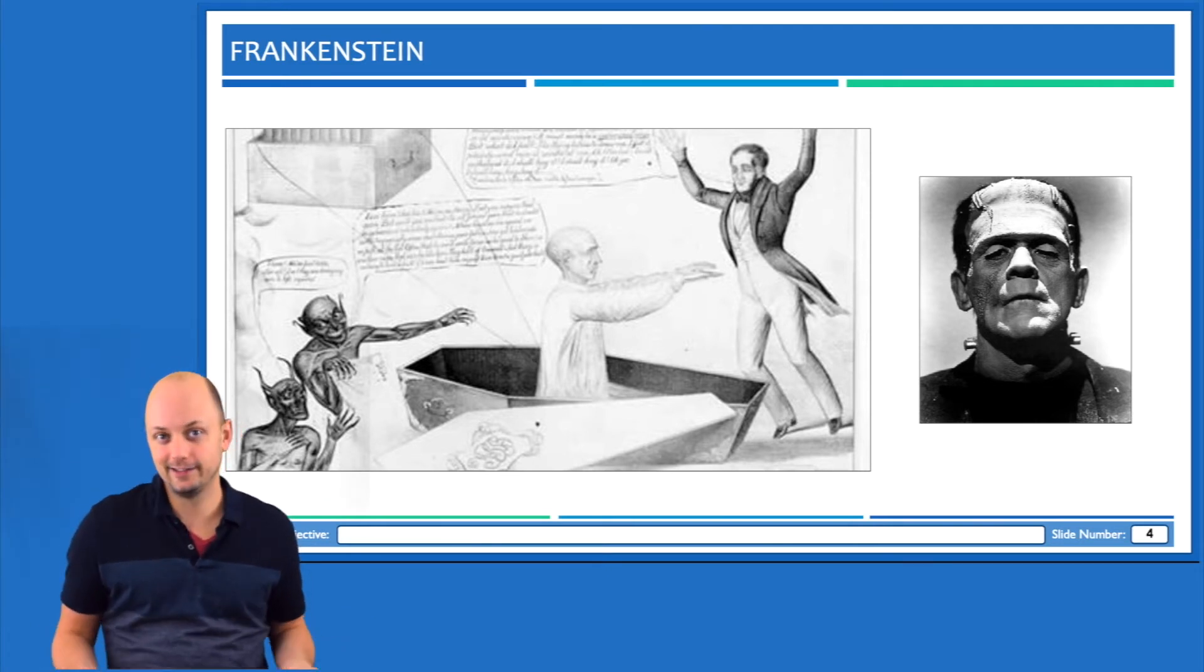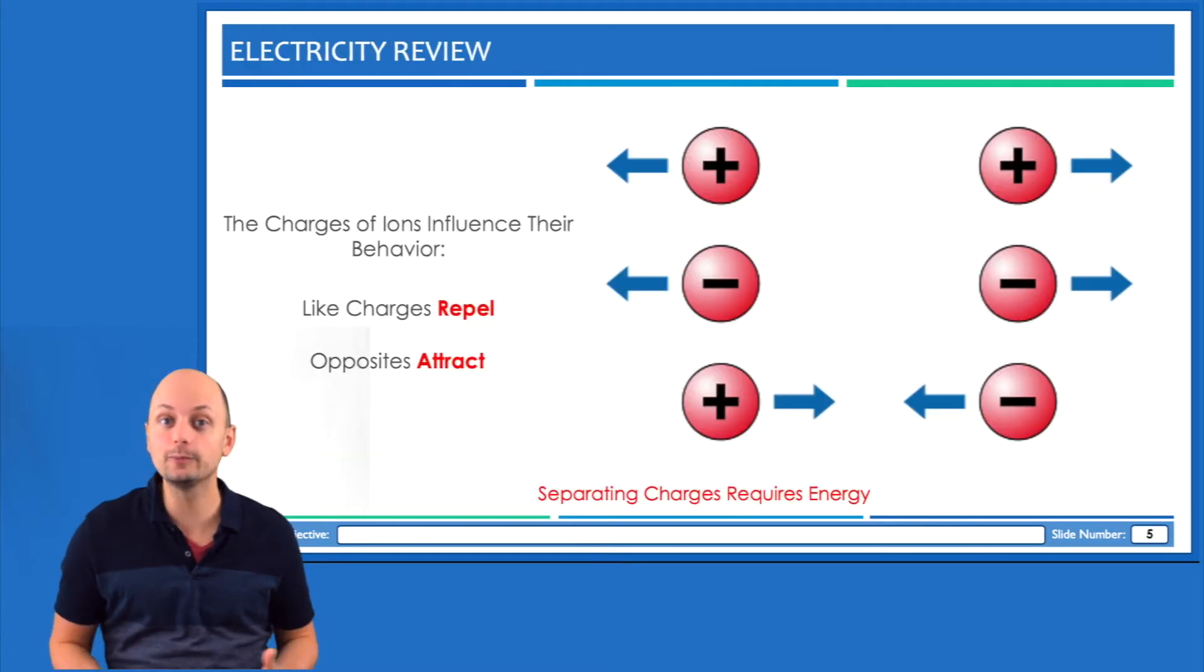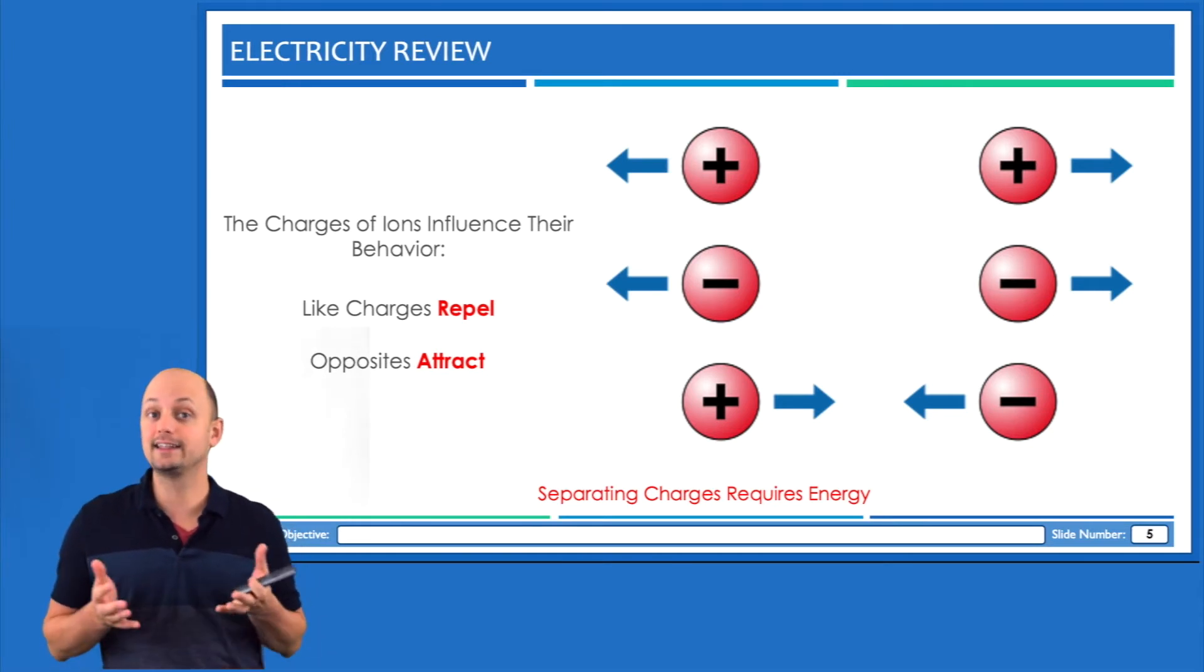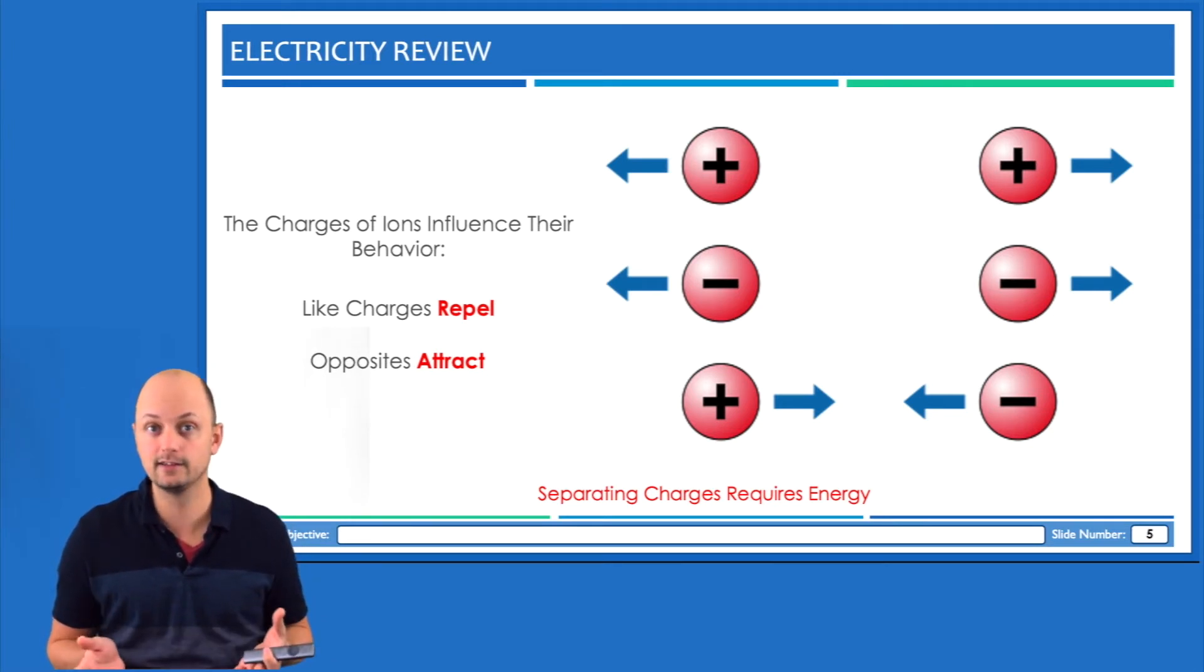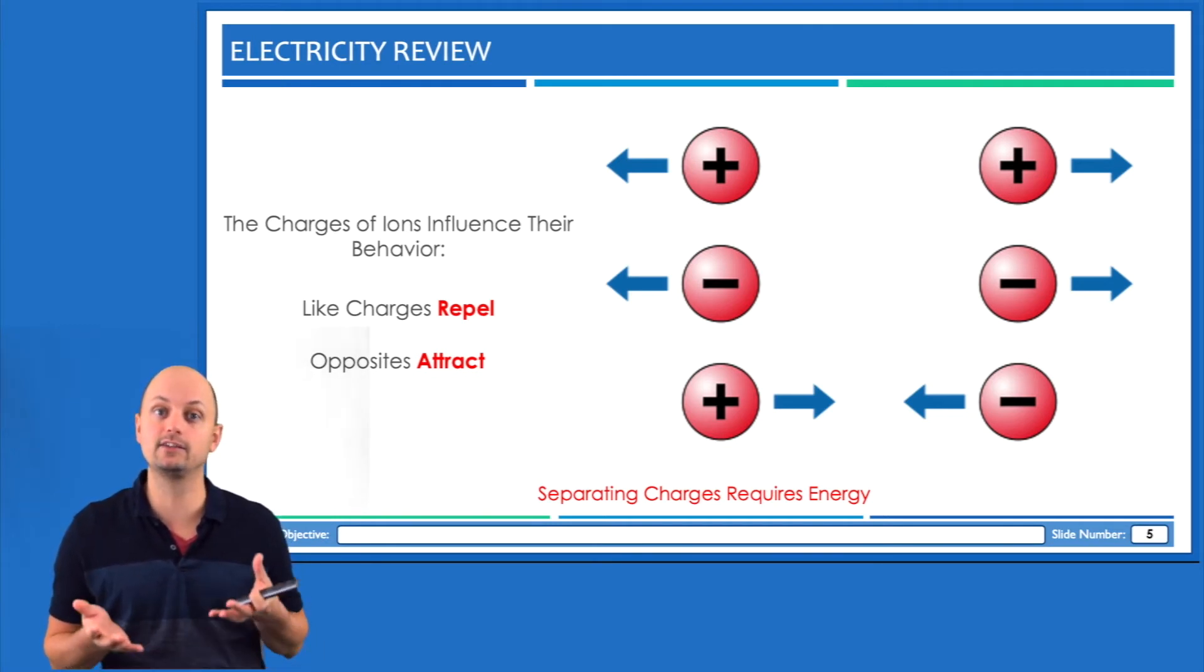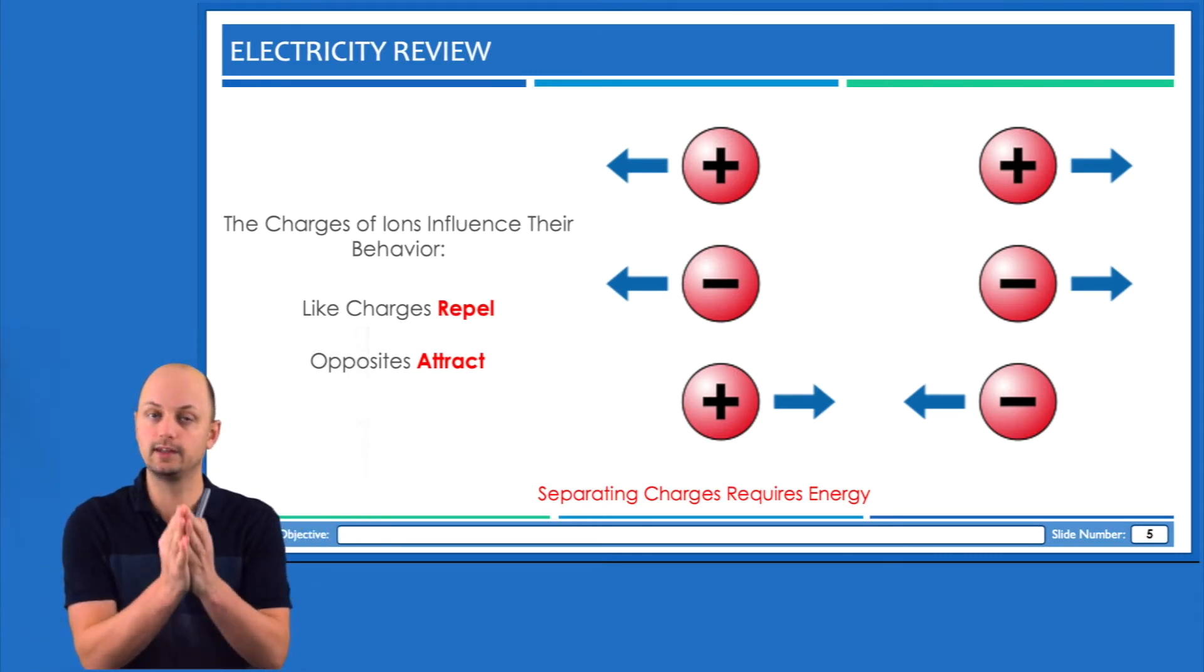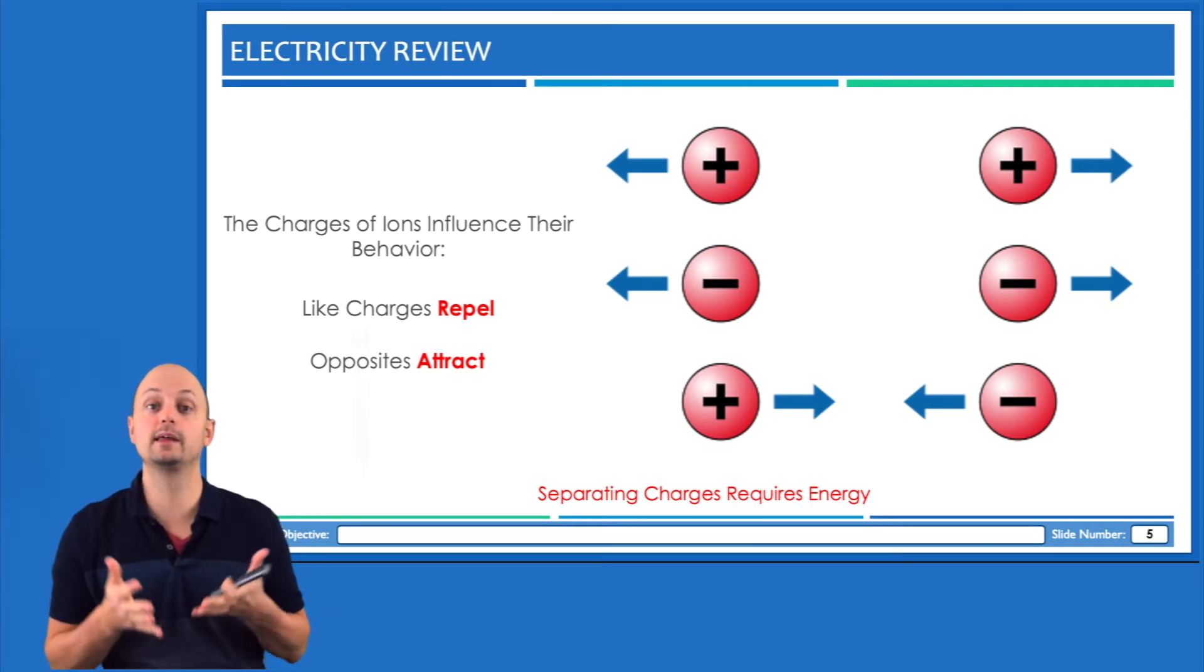In order to understand excitability, we have to know a little bit about electricity. And specifically, we have to know about how charged particles interact with each other. So as a kid, you might remember the experience of playing with magnets. And if you have that experience, it's actually one of the easiest ways to understand some of the basic properties of electricity. Specifically, that charged particles are either positive or negative, and opposite charges experience attractive forces that bring them together. Like charges experience repulsive forces that push them apart.